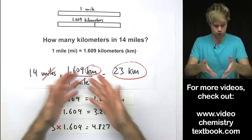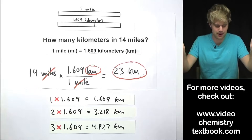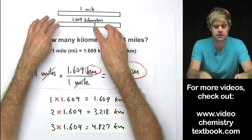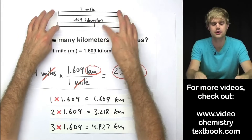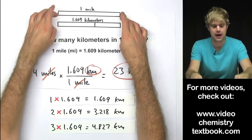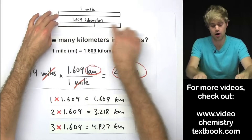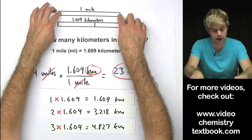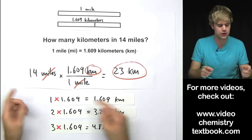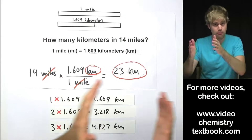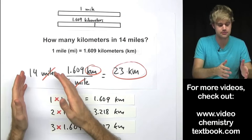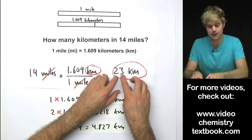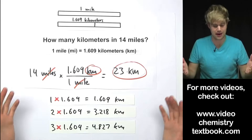Does the answer make sense? Kilometers are smaller than miles and there are more than one kilometer in one mile. So that means we should be getting more kilometers than miles. We start with 14 miles and end up with 23 kilometers, and that makes sense.